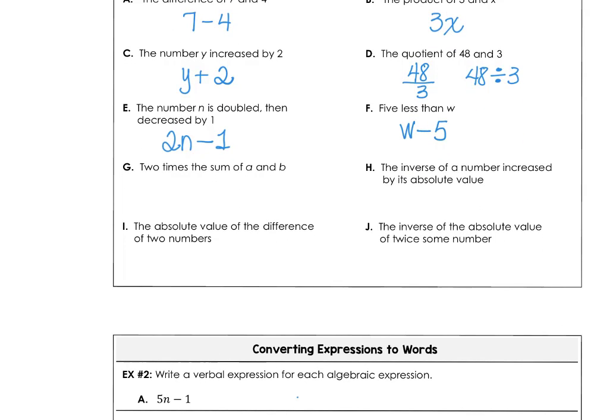Letter G, 2 times the sum of a and b. So I want 2 times the sum of a and b. Letter H, the inverse of a number. Well, the inverse of a number is the opposite of the number, increased by its absolute value.